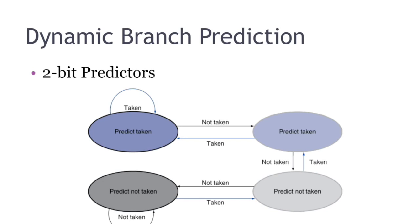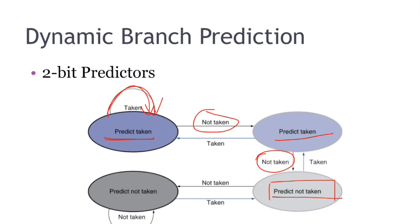So now let's take a look at the two-bit predictor. Instead of flipping the predictor right away after one wrong prediction, we will not flip our predictor until we see two wrong predictions in a row. This finite state machine diagram can help us understand better. If we start off predicting that the branch is taken and the branch is taken, it will stay in that state. If the branch is not taken for the first time, we will still predict that the branch is taken. If the branch is not taken again, we will predict that it's not taken. The same thing happens if we start off with branch not taken — if it's taken for the first time, we still predict not taken, and if it's taken a second time, we predict that the branch will be taken.